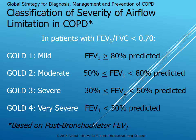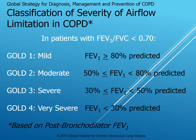This is your classification of severity. The first thing you always have to do is look at that FEV1/FVC ratio — is this obstructive disease? If it is, then how bad is it? If you have an FEV1/FVC ratio less than 0.7, then you know you have obstruction, so you start looking at your FEV1. If it's still above 80%, that's a mild stage — GOLD 1. Between 50 and 80%, it's GOLD 2 moderate. Between 30 and 50% predicted, GOLD 3 severe. And less than 30% predicted, it's very severe. All of these are based on post-bronchodilator FEV1.